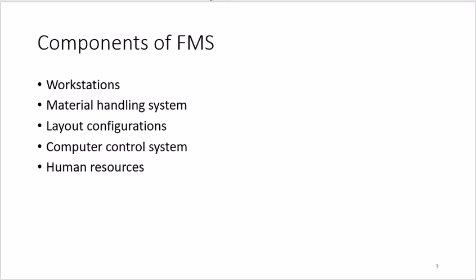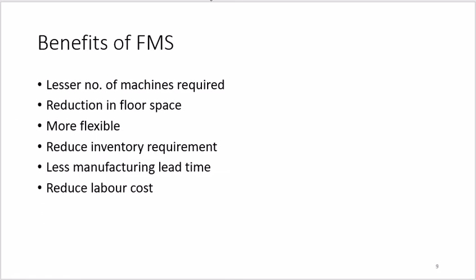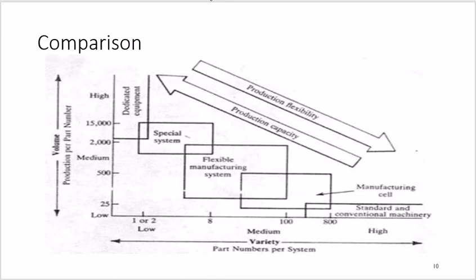The benefits of FMS include: better quality, greater variety of products, reduced labor costs, complete system flexibility, lesser number of machines required because machines are used efficiently, reduction in floor space as fewer machines means less space, reduced manufacturing lead time, and reduced inventory requirements — the computer can estimate production time accurately so inventory can be managed accordingly.